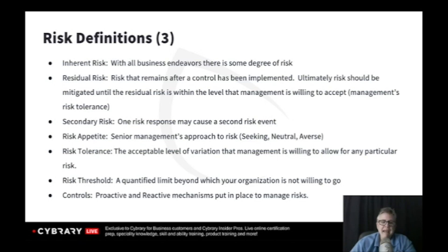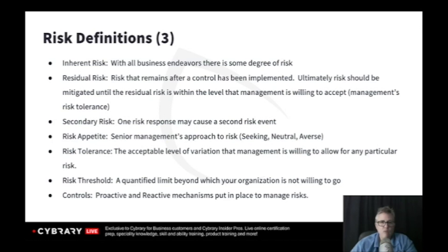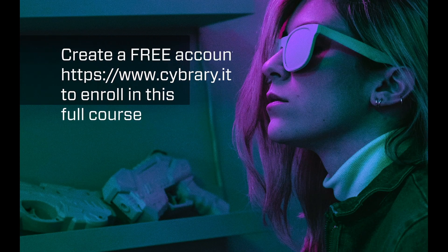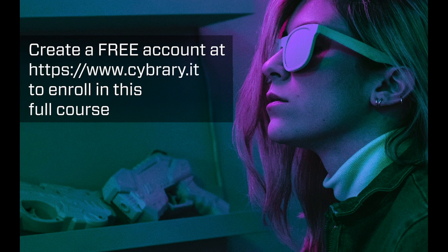We mitigate risks with controls — physical, technical, or administrative controls we put in place to reduce risk. Encryption is a control. A firewall is a control. Locking a door is a control. Separation of duties as a policy is a control. Anything we implement to try to mitigate risk, those are all controls.